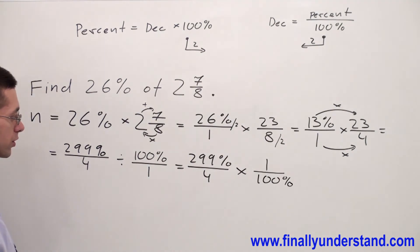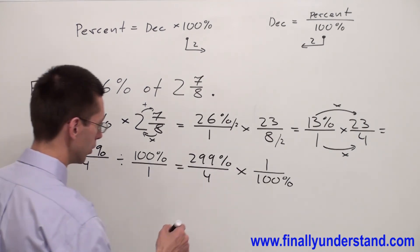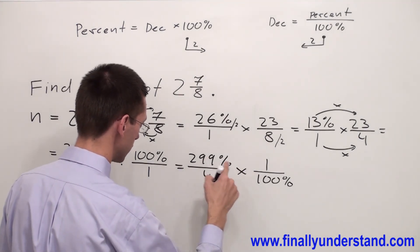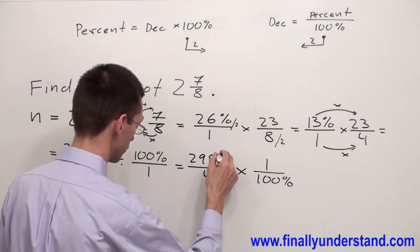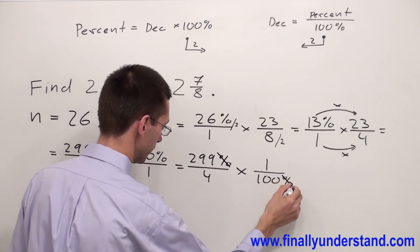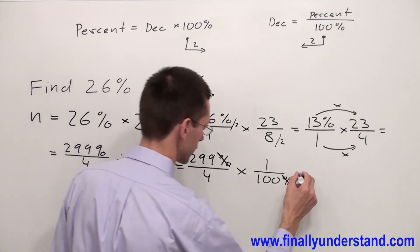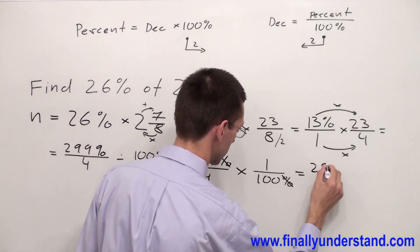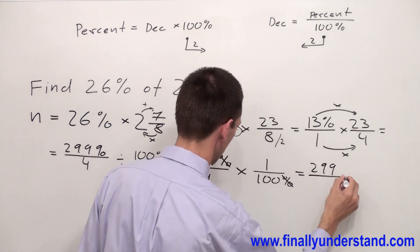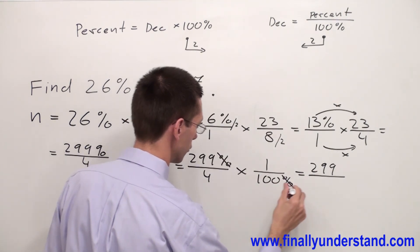Now please notice that we cannot reduce anything over here. Any numerator with any denominator cannot be reduced. So I'm going to simply multiply numerator by numerator and denominator by denominator. But remember, first we can eliminate percent. That's why I'm going to have 299 over 400. This is the solution to my problem.